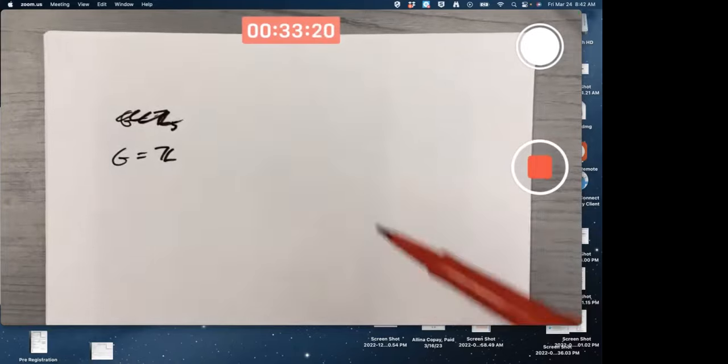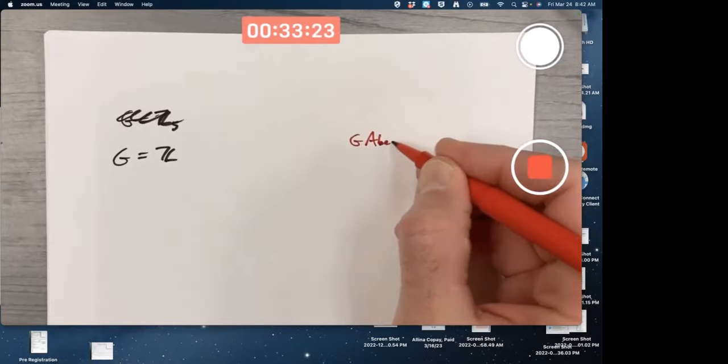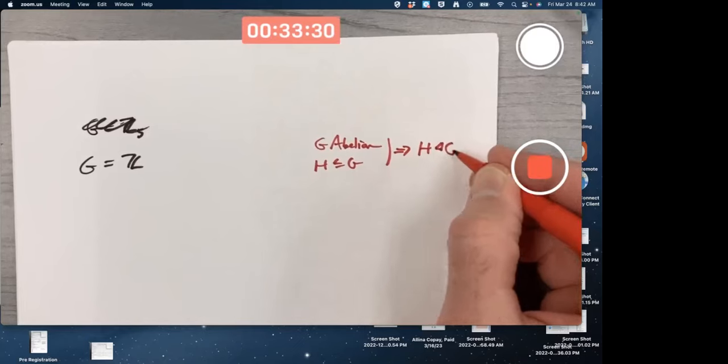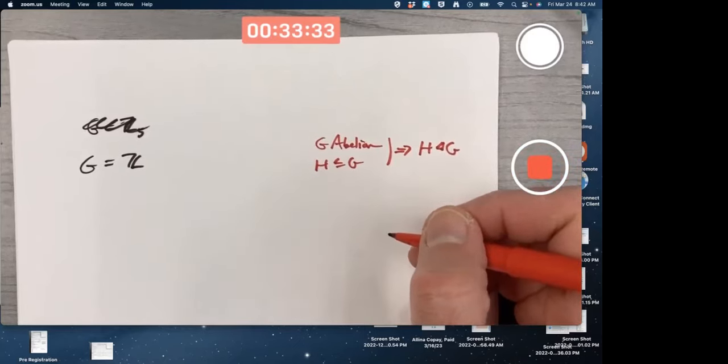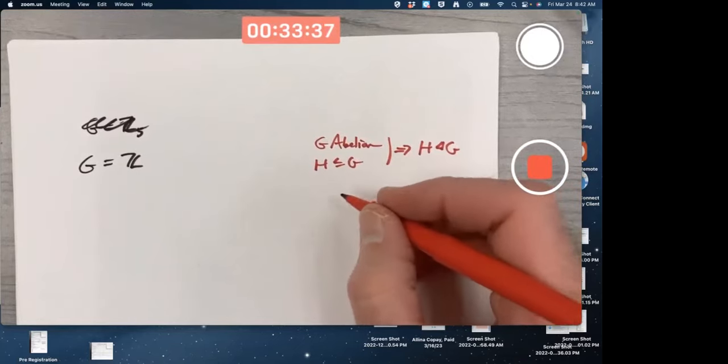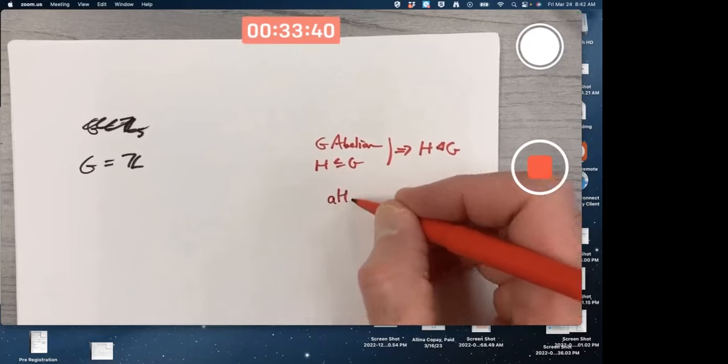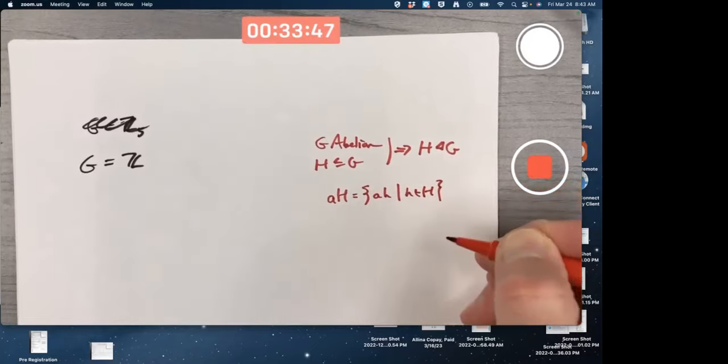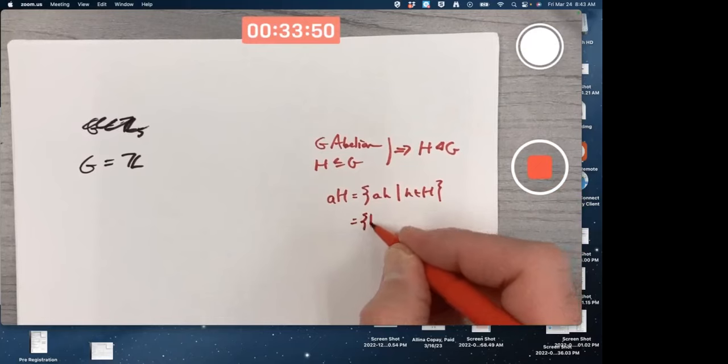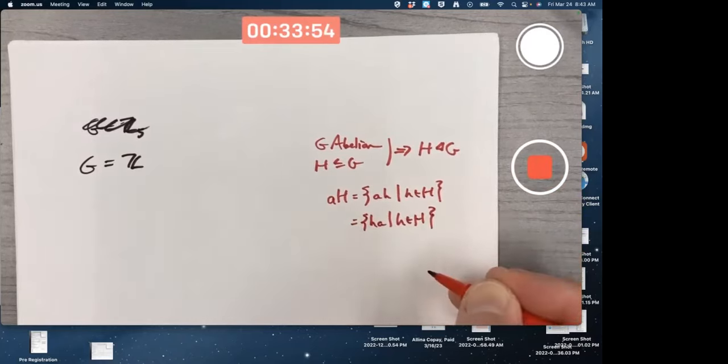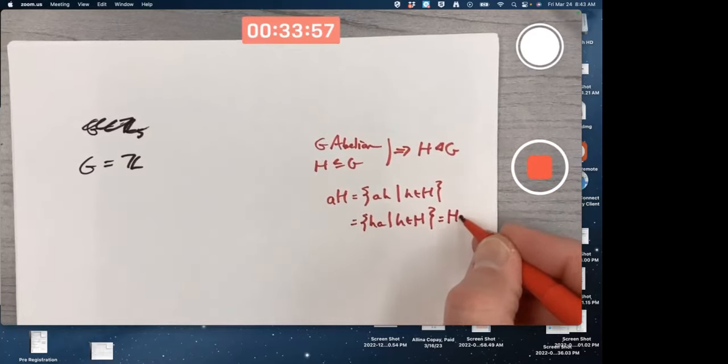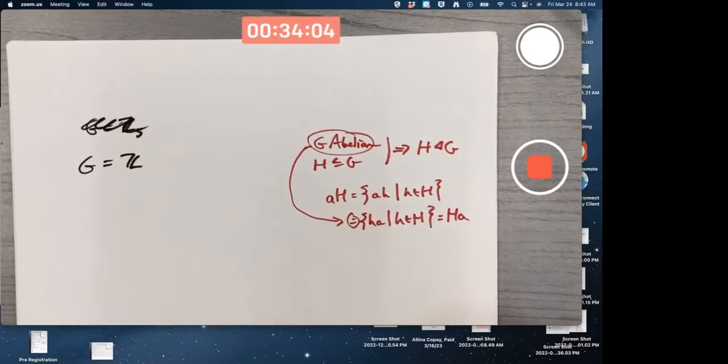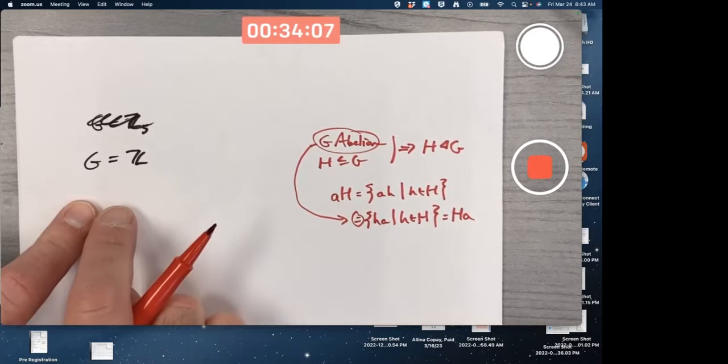Z is abelian. Any subgroup of an abelian group is a normal subgroup. All subgroups of abelian groups are normal. Why? If G is abelian and H is a subgroup of G, that's going to imply H is, in fact, a normal subgroup of G. Why? You could either use the definition of normality or the normal subgroup test. It's actually probably easier just to think about the definition of normality. Since G is abelian, these products are the same as these products. The left coset is the same as the right coset. Done. G is abelian is used right there. Z is abelian, so any subgroup of Z is going to be normal.